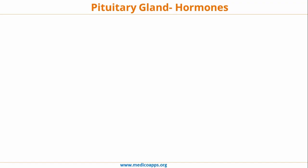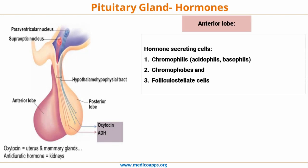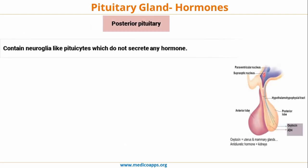The anterior lobe is the primary hormone-secreting part of the Pituitary Gland. The hormone-secreting cells include Chromophils, Chromophobes, and Follicostellate cells. More detail on what hormones they produce and their functions will be covered in physiology. For now, understand that the anterior part secretes hormones via these cell types.